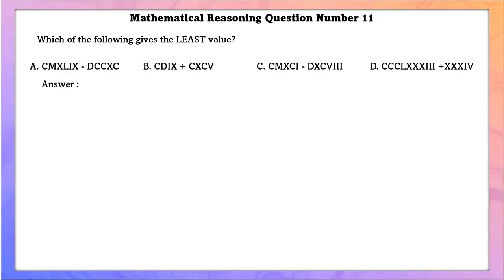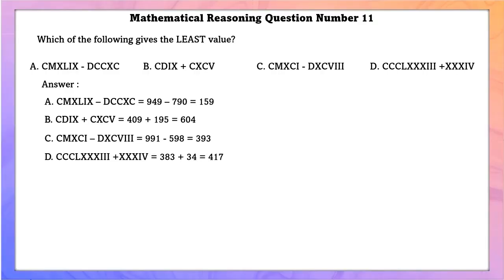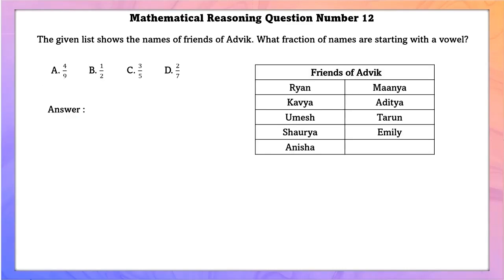Mathematical reasoning question number 11 — which of the following gives the least value? Option A equals 159, option B equals 604, option C equals 393, and option D equals 417. Option A is the least value.